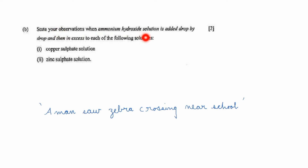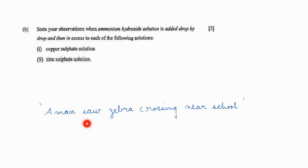State your observation when ammonium hydroxide solution is added drop by drop and then in excess to each of the following solutions: copper sulfate solution and zinc sulfate solution. In the chapter analytical chemistry, we were discussing a shortcut to identify the presence of cation as well as the solubility of the precipitate formed in excess of ammonium hydroxide as well as sodium hydroxide solution. I will share the link of that video in the description box.